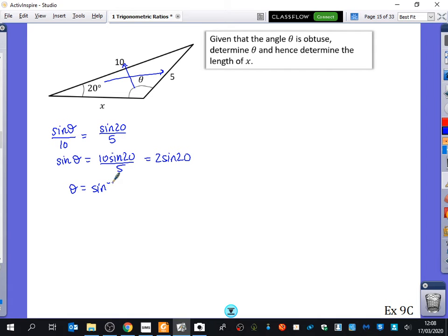So theta is equal to the inverse sine of this number, 2 sine 20. Well, 2 sine 20, I'll keep it in my calculator anyway, it's 0.684 blah blah blah. So I'm going to do the inverse of 0.684 and I will get that theta is 43.16 degrees.